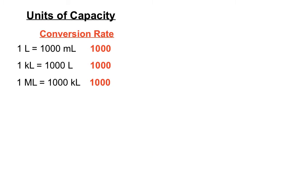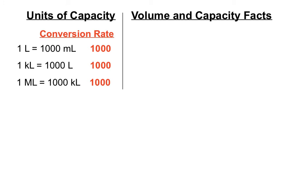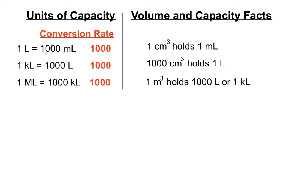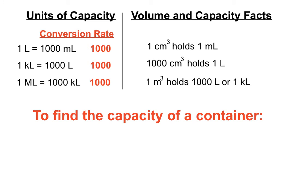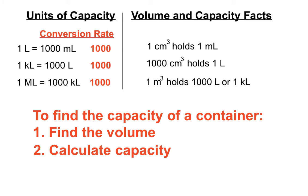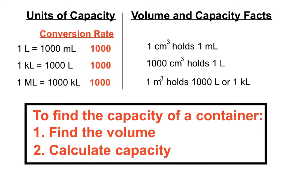There's quite a lot to think about with conversion rates and units of capacity. There's also a relationship between volume units and capacity units. One centimetre cubed holds one millilitre of liquid. One thousand centimetres cubed holds one litre. And one metre cubed holds one thousand litres, which equals one kilolitre. To find the capacity of a container, we find the volume first, then use those capacity facts to calculate how much liquid it will hold.